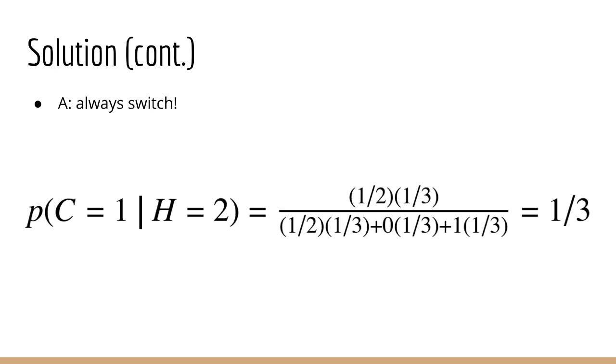Note that we can do a similar calculation for P of C equals 1 given H equals 2. I'll presume we don't need to derive Bayes' rule again, so let's just plug in the numbers. After doing so, we get one half times one third all over one half times one third plus zero times one third plus one times one third. And this is all equal to one third. So we have our answer. We should always switch to door number three because that gives us double the chance of winning.